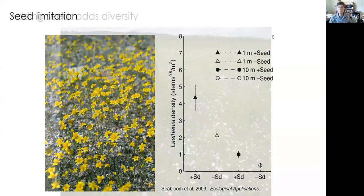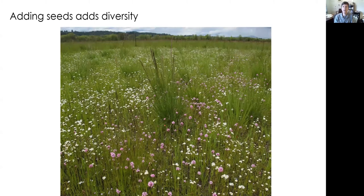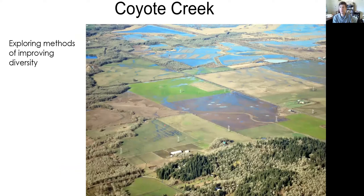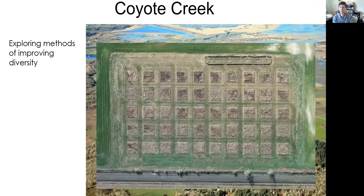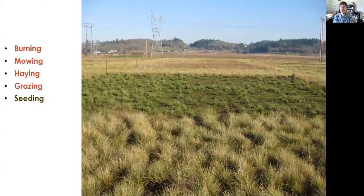Adding seeds is one of the best ways to add diversity. I'd like to show results of an experiment we conducted in western Oregon at a place called Coyote Creek. We established vegetation in plots with a grid, then manipulated the site with different management treatments and seeding. The site features 15-by-15-meter grid cells dominated by grass and other forms — this is a wetland habitat.